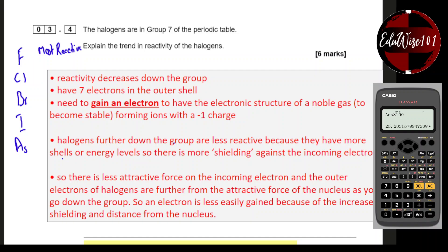There is also less attractive force on the incoming electron, and the outer electrons of halogens are further from the attractive force of the nucleus as you go down the group. An electron is less easily gained because of the increased shielding and distance from the nucleus.